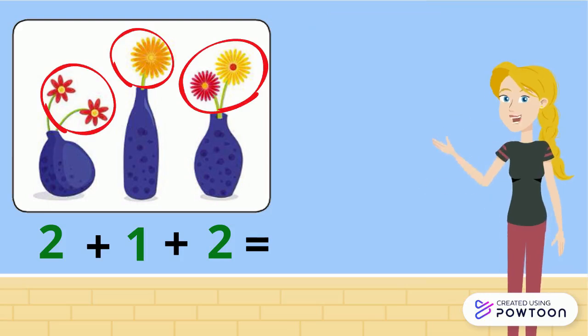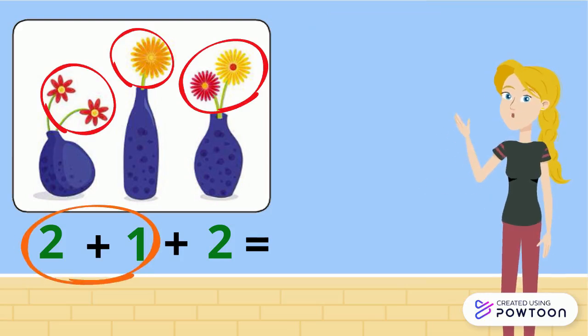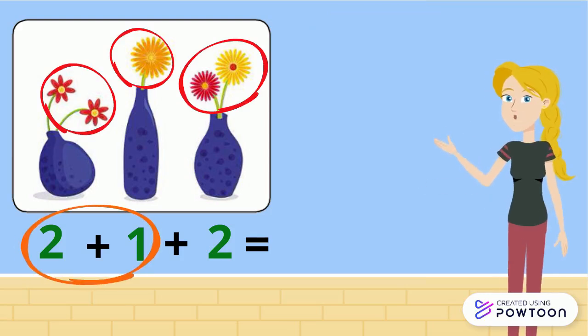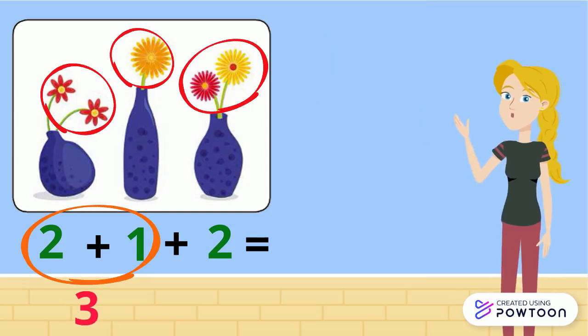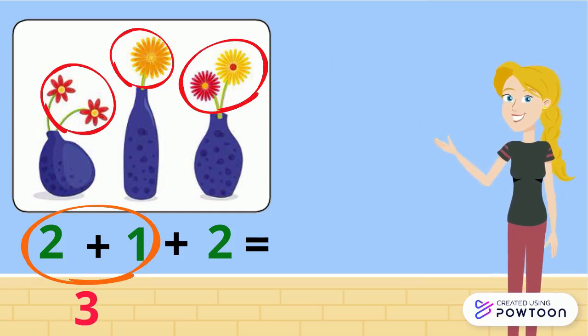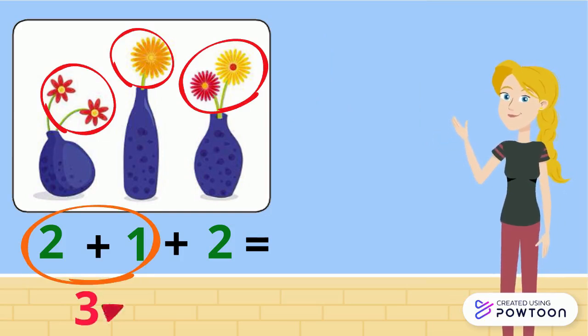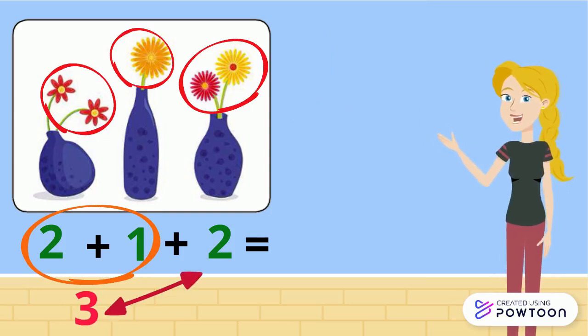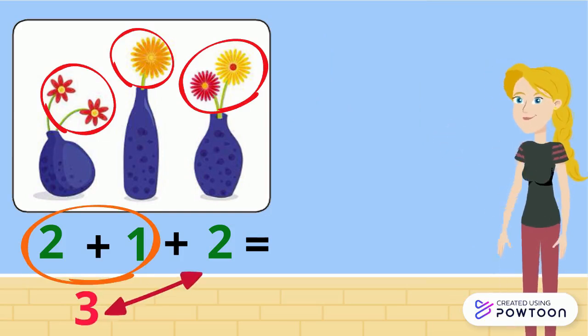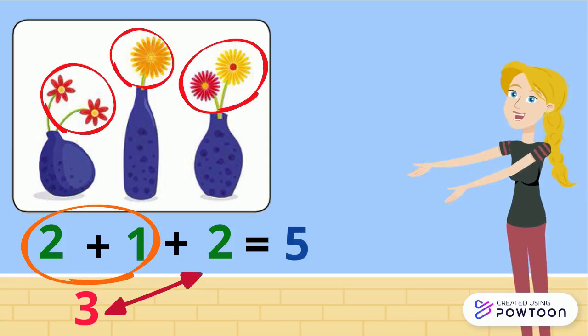First, we are going to add 2 plus 1. 2 plus 1 equals 3. Then we add 3 plus 2. The result is 5. So, 2 plus 1 plus 2 equals 5.